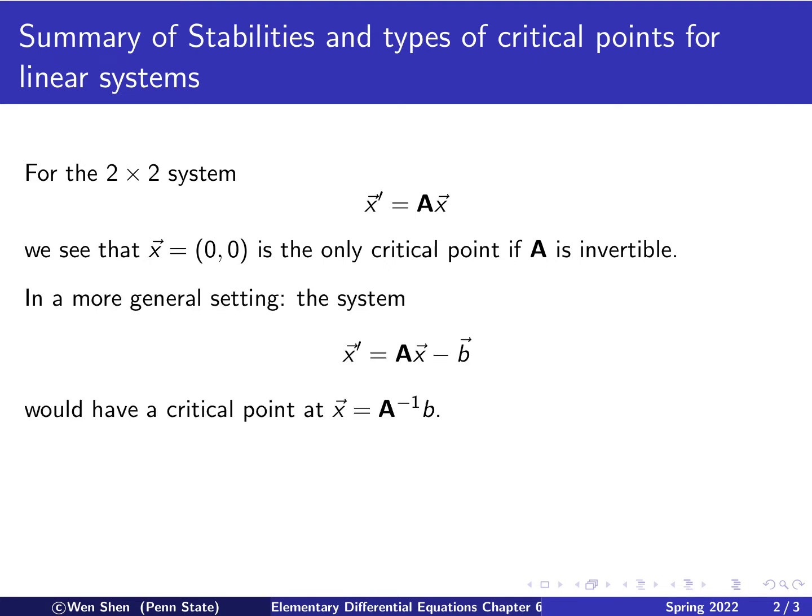We put a remark here that in a more general setting, we can have a system like this, where you have a constant vector B. If that is the case, then we will have a unique critical point at A inverse times B, that's not the origin. And this whole thing is just a shifting in the x₁, x₂ plane from the origin to the new critical point, and the discussion of the critical point and its stability remains the same.